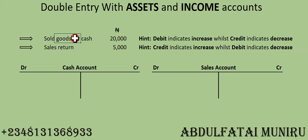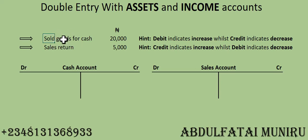We're going to illustrate two transactions. The first one is: sold goods for cash for 20,000 Naira. In every transaction there are at least two accounts involved. In this case, you have to determine what accounts are involved. Since you sold goods for cash, there is a sales account and a cash account.